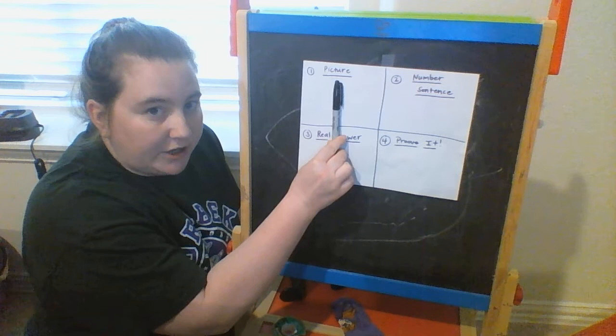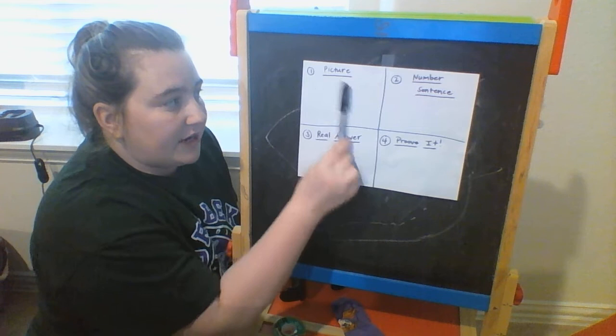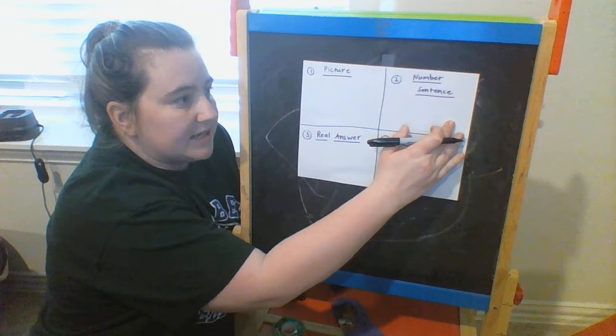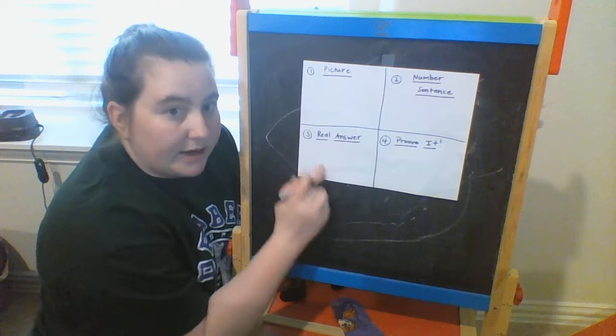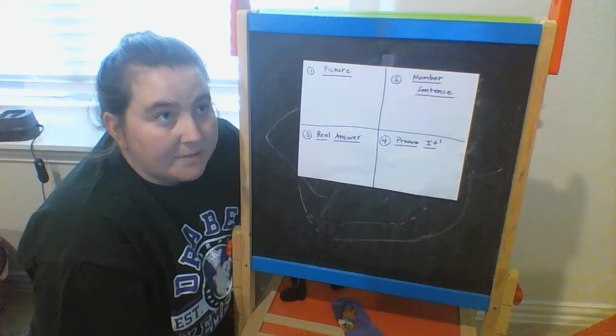The first thing that you need to be able to do is draw a picture to show what's happening in the math story problem. You're going to use that picture to create a number sentence — the same way that we have sentences match our writing when we're writing stories, we want our number sentence to tell the story of what's happening in our math picture. After that, we're going to write the real answer, meaning we'll look at exactly what the question is asking and make sure our answer is actually answering the question, explaining it using not only a number but a word.